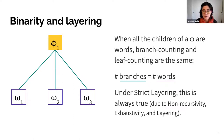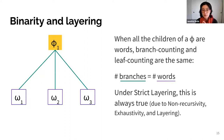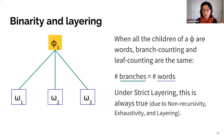Under strict layering, three conditions are enforced on prosodic trees: non-recursivity, exhaustivity, and layering. Non-recursivity says a phi cannot contain another phi. Exhaustivity says a phi can't have children lower than the prosodic word. Layering says it can't have children higher than the prosodic word. If all three conditions are required, the only possibility is that the children are all words. So under strict layering, the distinction between branch and leaf counting is irrelevant.